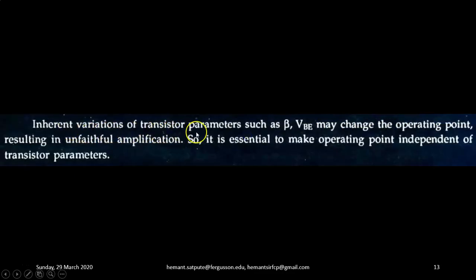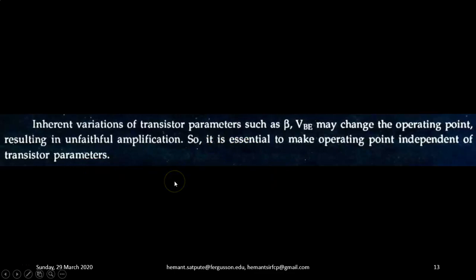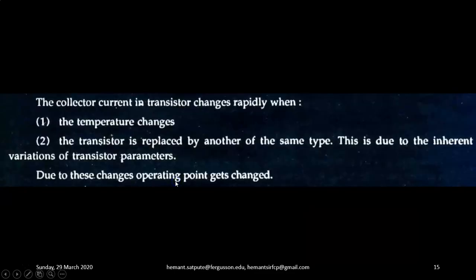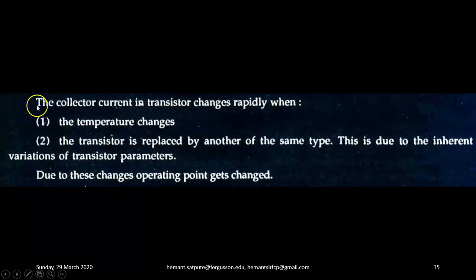Inherent variations of transistor parameters such as beta and VBE may change the operating point, resulting in unfaithful amplification. So, it is essential to make the operating point independent of transistor parameters. The collector current in a transistor changes rapidly when the temperature changes or when the transistor is replaced by another of the same type. This is due to inherent variations of transistor parameters.